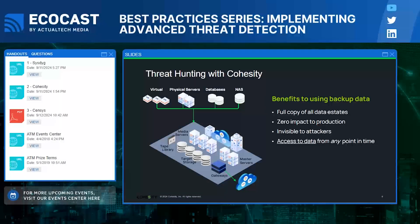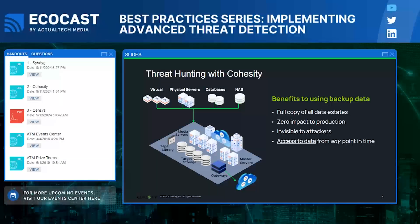We're hearing more and more from the industry, from customers, and from analysts that backup data can actually be a part of solving this problem. It's not a panacea, it's not a magic button. But what we're able to do is allow our customers to go threat hunting through our data. If you think about it, a backup is a copy of all of your production data. By having that copy sitting there, we can do more with it — we can do more threat hunting, we can do more analysis. AI is an amazing tool for looking through corpuses of data to do analytics. And from a security point of view, this data allows us to have the ability to go threat hunting with zero impact on your production environment.